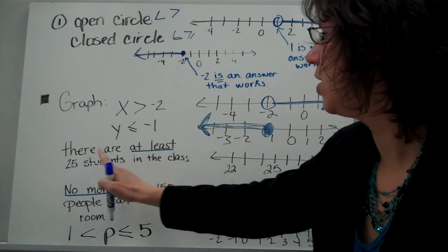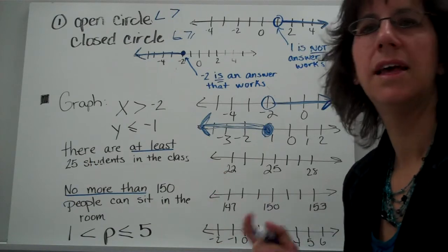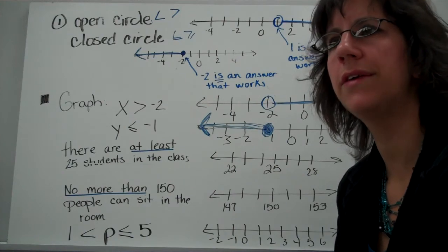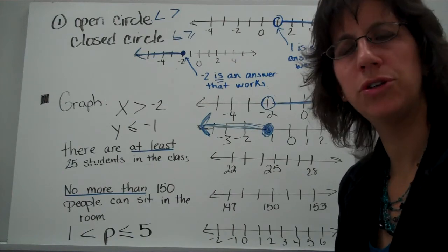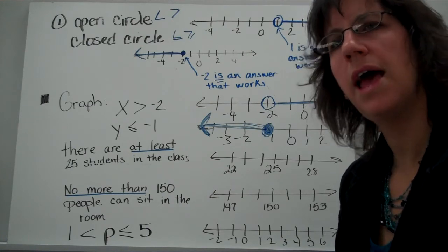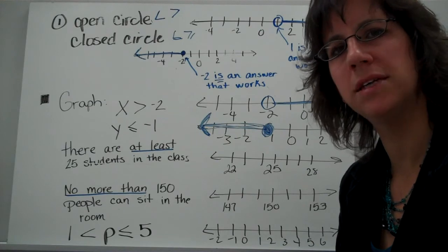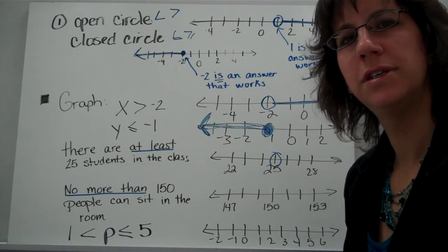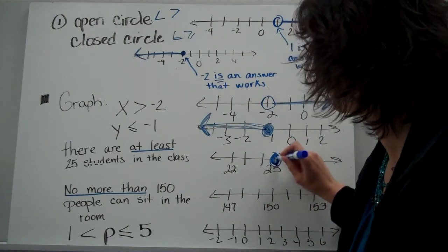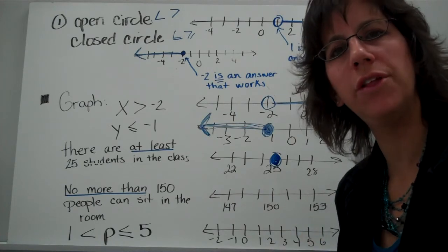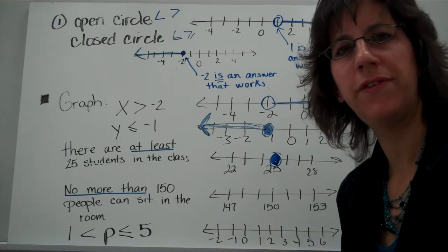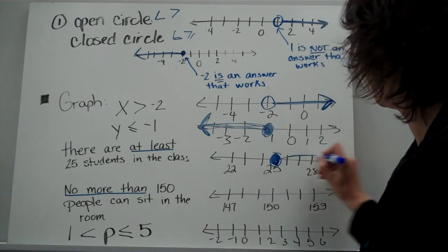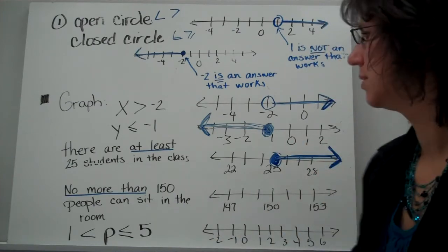These words can be a little tricky. 'There are at least 25 students in the class.' Think about that — does 'at least 25' mean 20 students? 30 students? It means the smallest number possible is 25. Is 25 an option? It sure is. So we shade that, and look for all numbers bigger than 25 — you could have 30, 29, 31, or even 76 in the class.